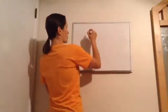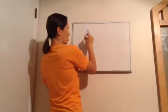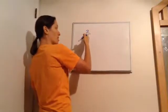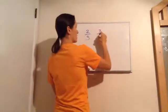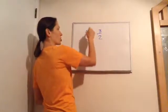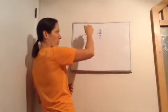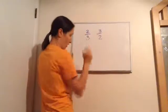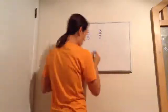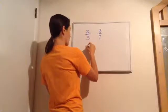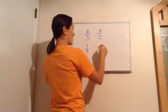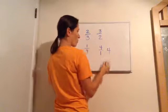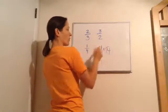You learned reciprocals several years ago, but let's review. The reciprocal of two-thirds is three-halves. Basically, you're just switching the numbers around — the numerator becomes the denominator and the denominator becomes the numerator. The reciprocal of one-fourth is four over one, or just four, because four is four over one.